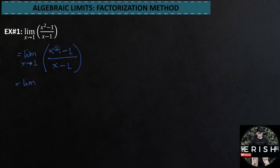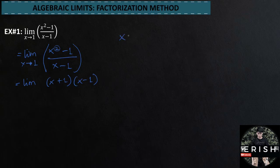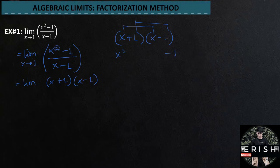Limit of — if we factorize the numerator, the factors are x plus 1 and x minus 1. So why did it become that? Let's check if our factors are correct. This is x plus 1 times x minus 1: x times x is x squared, 1 times negative 1 is negative 1, 1 times x is positive x, x times negative 1 is negative x.